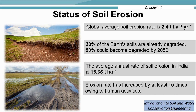Let us discuss the status of soil erosion. Globally, around 2.4 tons per hectare of soil is eroded every year. 33% of the soils on this earth are already degraded, and it is estimated that by the year 2050, around 90% could become degraded. This is quite alarming. In India, the average annual rate of soil erosion is 16.35 tons per hectare, with some regions facing more severe problems than others.